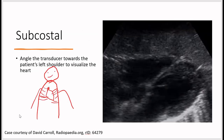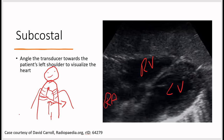For the subcostal view, position the transducer in the substernal area with the marker pointed toward the patient's left and the tail dropped down at an angle. Structures visible include the right ventricle, right atrium, left ventricle, and left atrium.